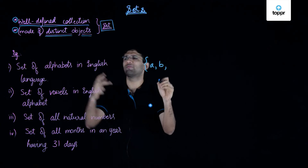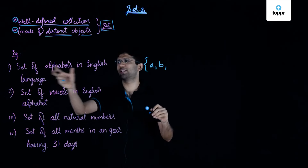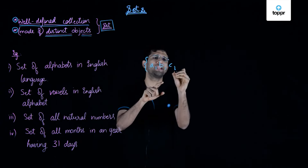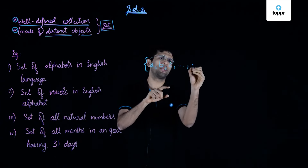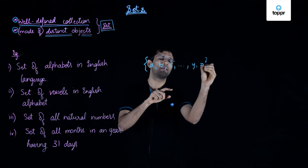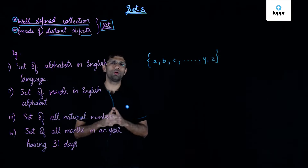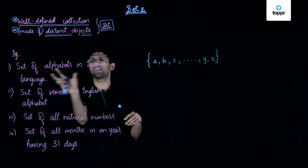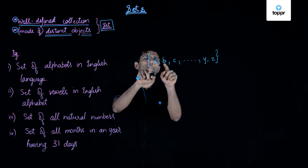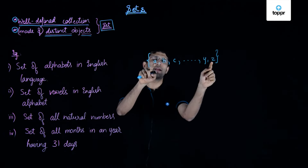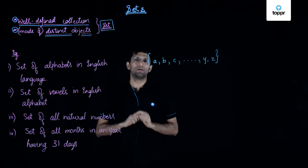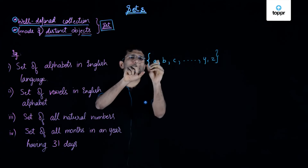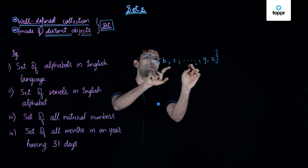B is also an element of this set because this set consists of alphabets in the English language, so we can write A, B, C, D and so on until we come to X, Y and Z. If we look at this set — the set of alphabets in the English language — we get elements right from A up till Z. Note that all these elements are written within brace brackets and are separated by commas.